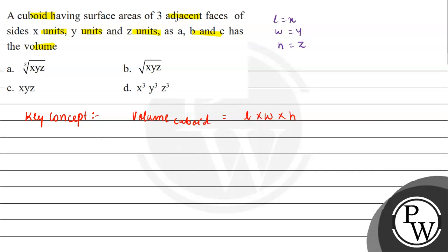In this case, we have A, B, and C representing surface areas of three adjacent faces. So let's suppose if A is length multiplied by width, so this will be X multiplied by Y. If B is width multiplied by height, so this is Y multiplied by Z. And if C is height multiplied by length, so this is Z multiplied by X.